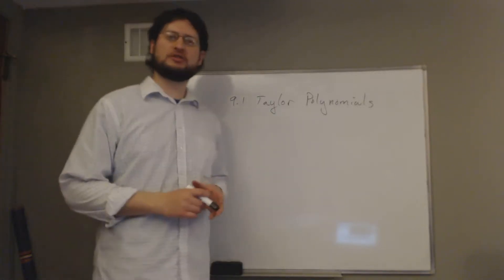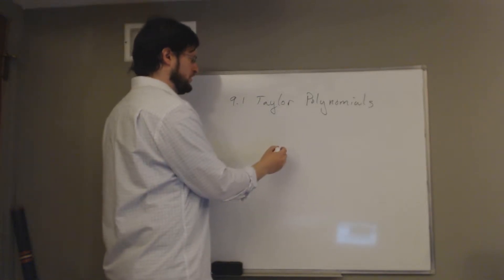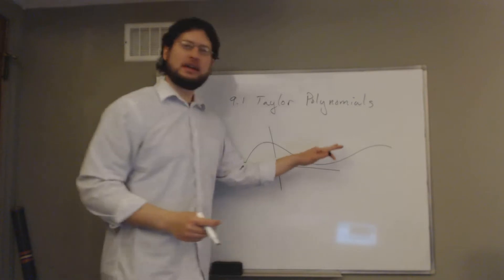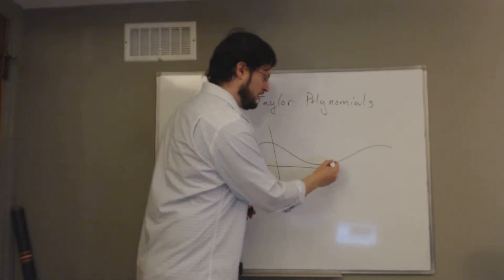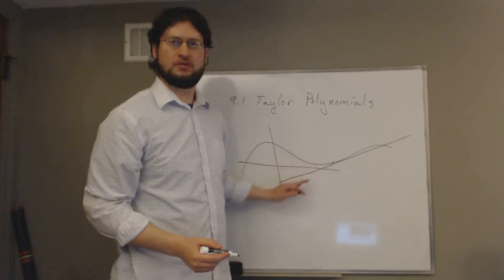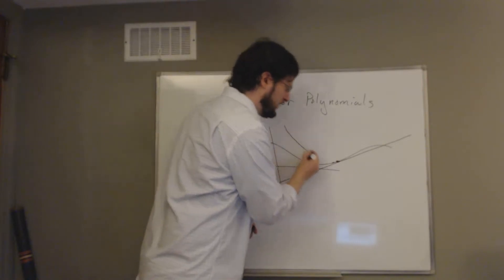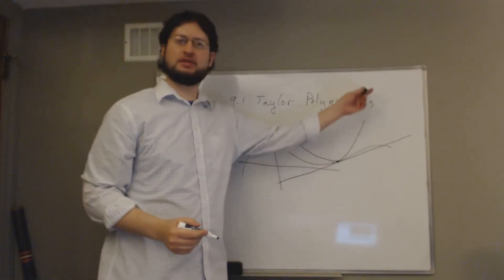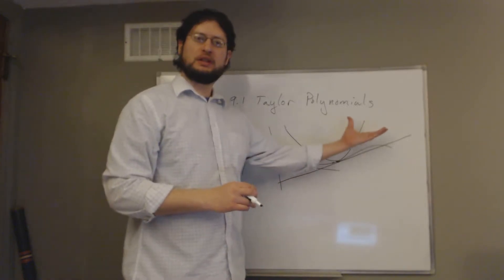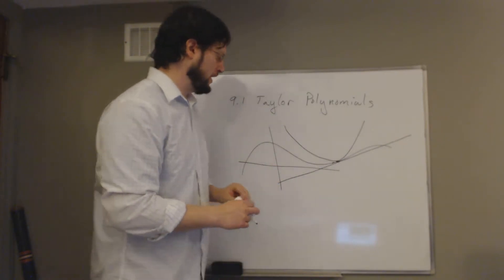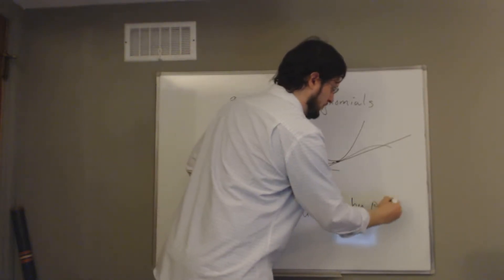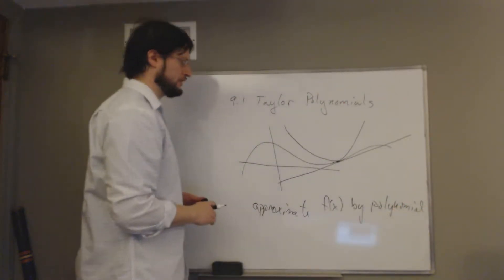Today we're going to look at section 9.1, Taylor polynomials. The big idea is to take a function and ask: can I make a good approximation of this function with a straight line, a parabola, a second-degree polynomial, a cubic, or a quartic? We want to put polynomials that match our function on the graph. Our goal is to approximate functions by a polynomial.